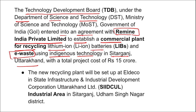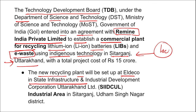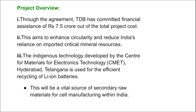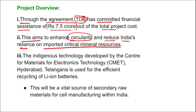The location is important: the plant will be in Sitarganj, Uttarakhand — specifically at ALDECO in the State Infrastructure and Industrial Development Corporation Uttarakhand Limited industrial area in Sitarganj, Udham Singh Nagar district, Uttarakhand. Through the agreement, the Technology Development Board has committed financial assistance of 7.5 crore rupees out of the total project cost. This aims to enhance circularity and reduce India's reliance on imported critical mineral resources.